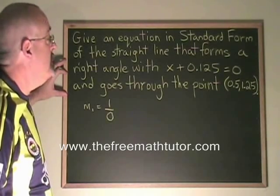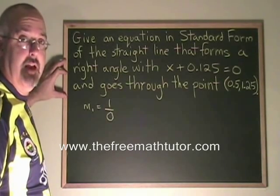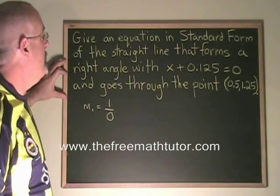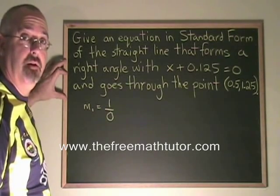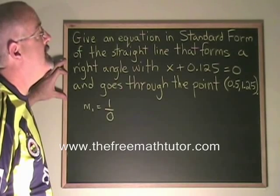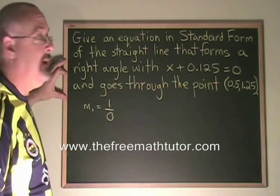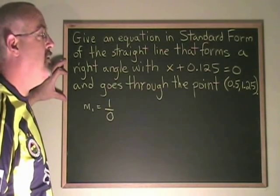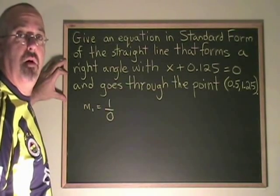In this example, we are being asked to give an equation in standard form of the straight line that forms a right angle with, and is therefore perpendicular to, the line x plus 0.125 equals 0, and goes through the point (0.5, 1.25).